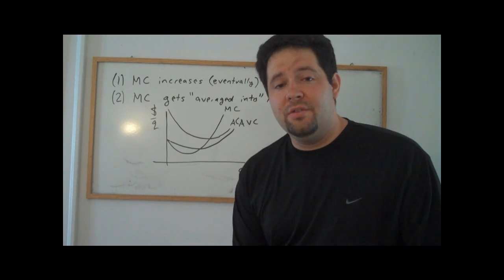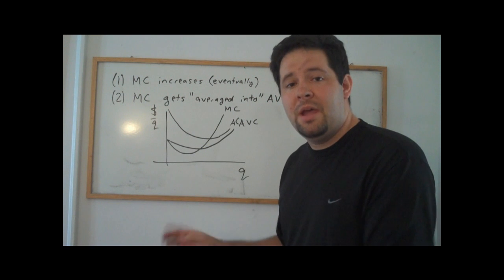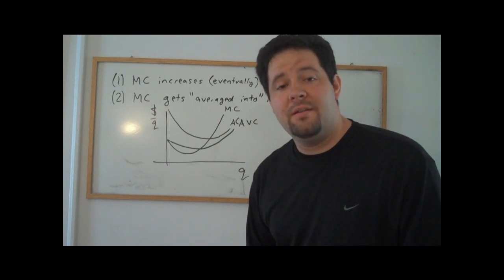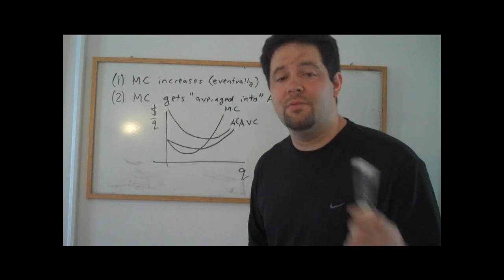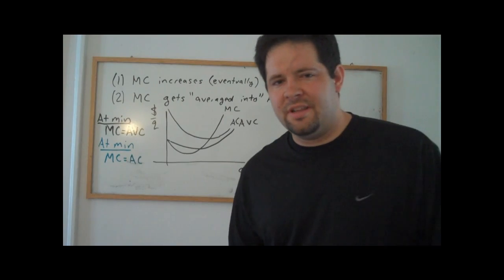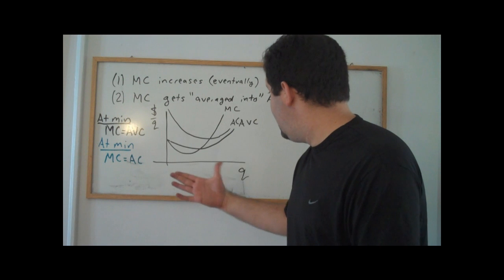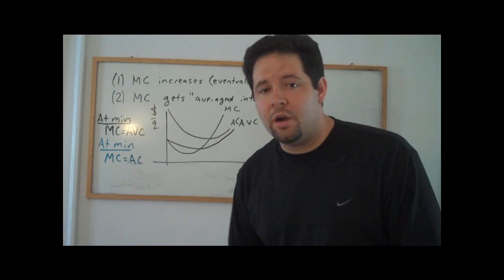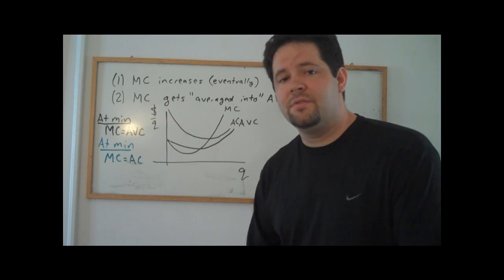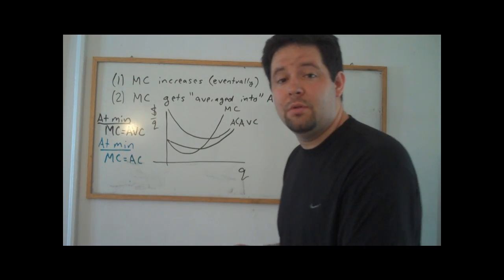A very useful way to figure out where these minimum values are on average variable cost and average cost is to use this relationship: at the minimum of those average cost curves, marginal cost equals that average cost curve. So if we wanted to find the minimum of average variable cost, we'd set marginal cost equal to average variable cost. To find the minimum of average cost, we do the same thing with average cost. Economics has become a substitute for calculus — instead of a hard calculus problem, we've reduced it to setting two formulas equal to each other.